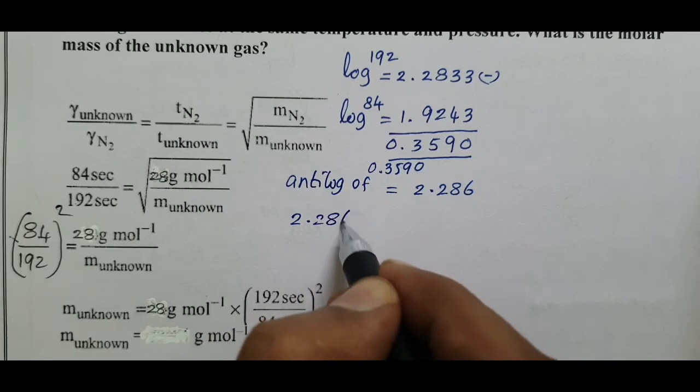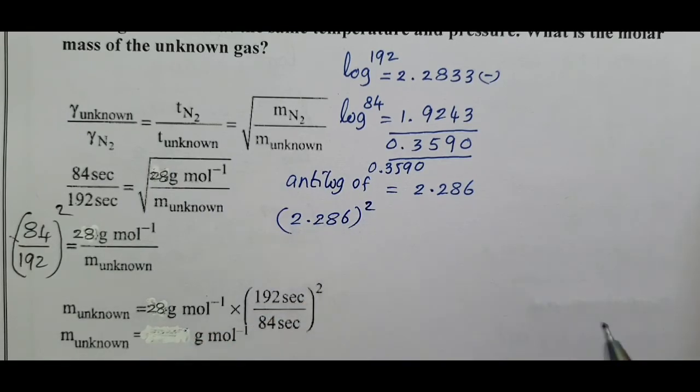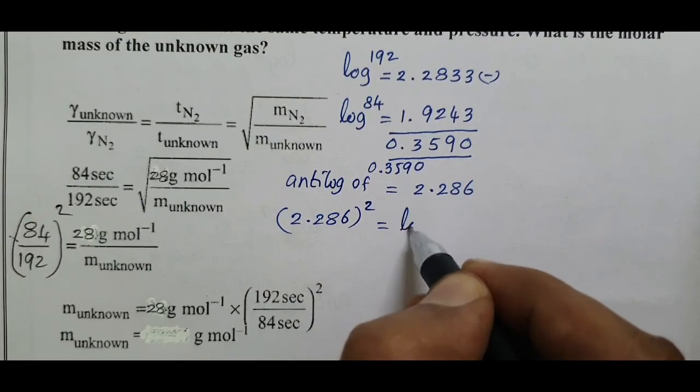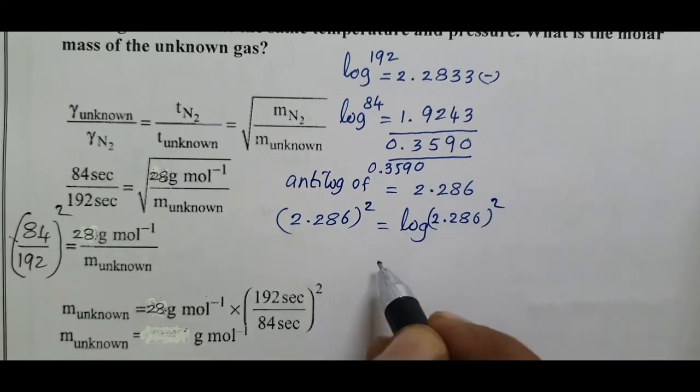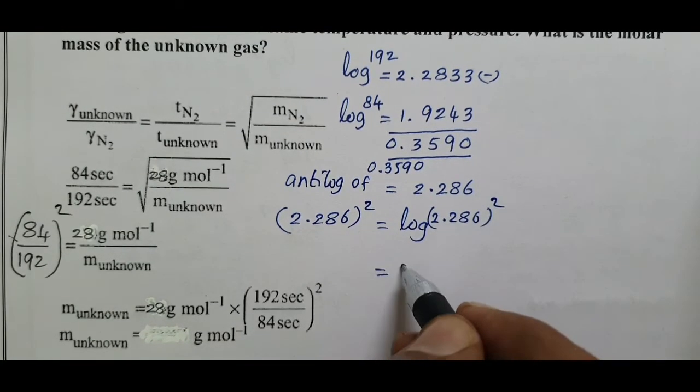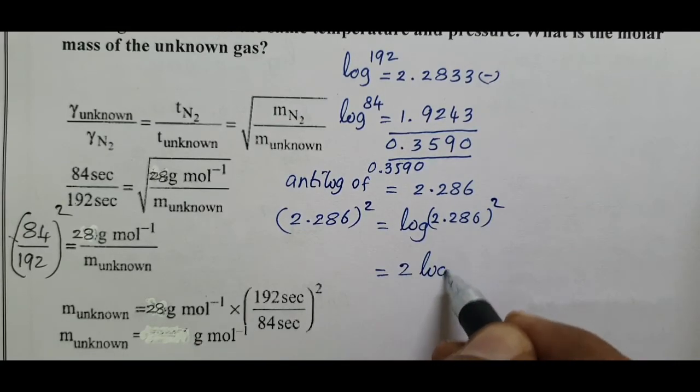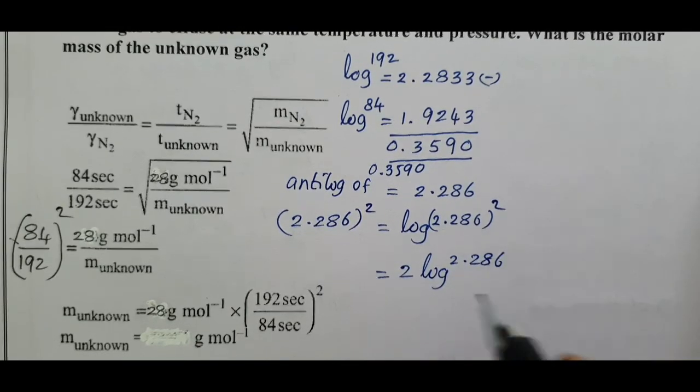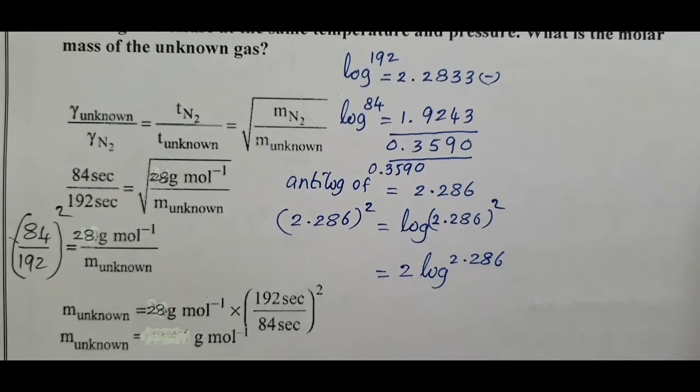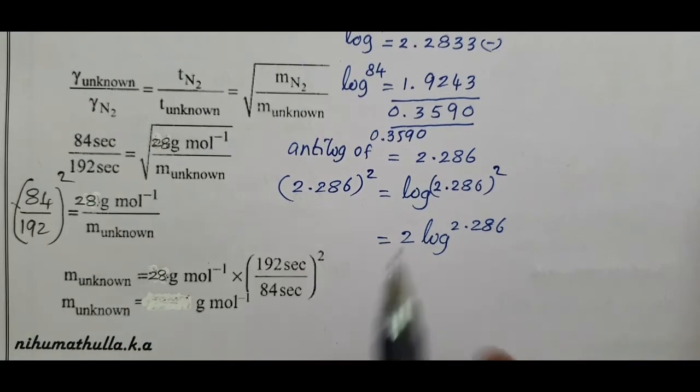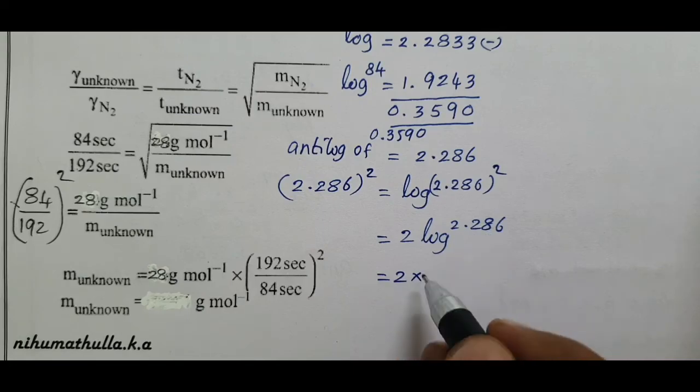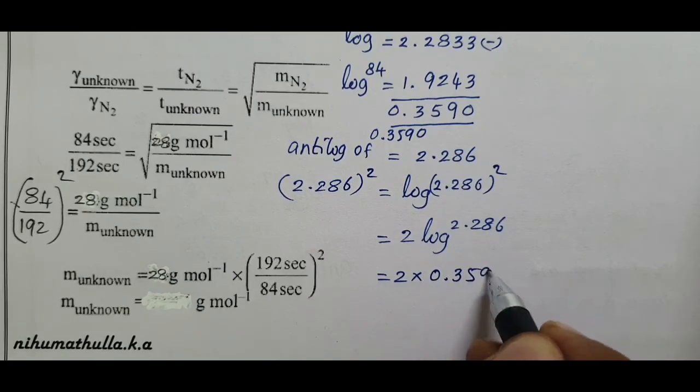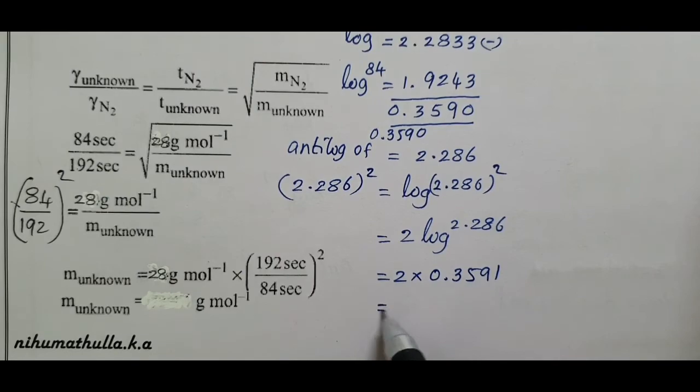2.286 whole power 2. Log b power a equals a log b. So 2 times log 2.286, log of 2, all multiple answer antilog, that equals 2 times log 0.3591. The answer is 0.7186.